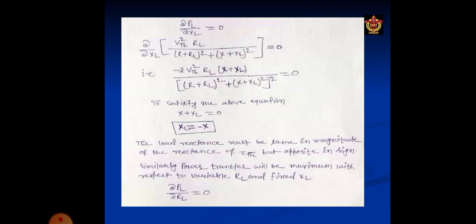For maximum power, dPL with respect to derivative XL, maximum power is dPL upon dXL equal to 0. So dPL which we have taken value is VTH square into RL upon R plus RL square plus X plus XL square. We will differentiate and equal to 0. This differentiation gives X plus XL equal to 0, so XL equal to minus of X.